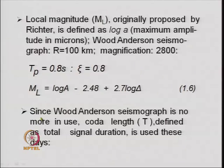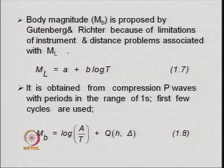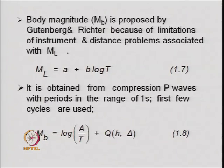Since the Wood Anderson seismograph is no more in use, being a very old type of equipment, coda length called t — defined as total signal distance — is used these days. Equation 1.7 shows the relationship between the local magnitude of earthquake and the coda length t. It has two constants A and B, which are obtained from the study of the local region.